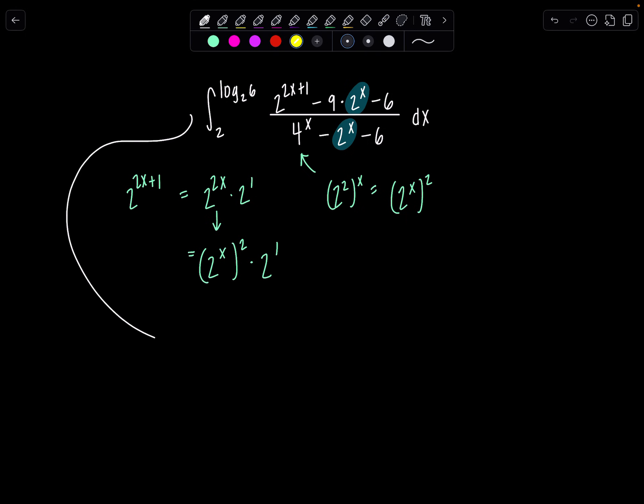Multiplication is commutative, so you can interchange where those exponents are. Now let's rewrite everything that way we can be set up to do a nice little u sub. From 2 to log base 2 of 6, the numerator I'm going to write as 2(2^x)^2 - 9·2^x - 6 over (2^x)^2 - 2^x - 6 dx.